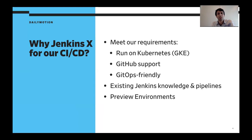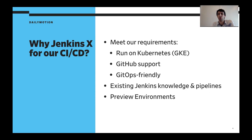Why did we select JenkinsX for our CI/CD pipelines? We have a few requirements. We want to run on Kubernetes and Google Cloud. All our code is hosted on GitHub, so we need good GitHub support. We'd like to adopt the GitOps way of deploying and managing applications — something GitHub-friendly. JenkinsX meets all these requirements. Another good point is that we're already using Jenkins internally, so we have a lot of people with Jenkins knowledge and existing Jenkins pipelines we'd like to reuse. The last important point was JenkinsX preview environments, which I'll talk more about later.